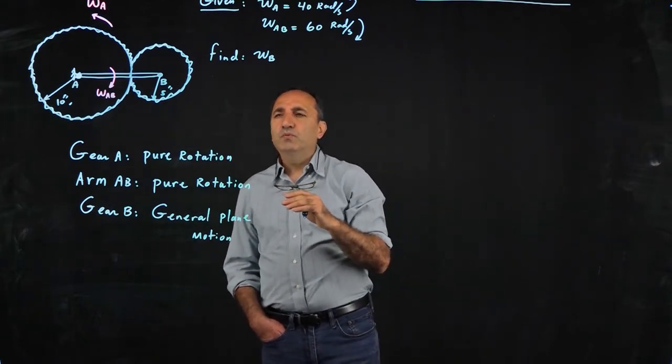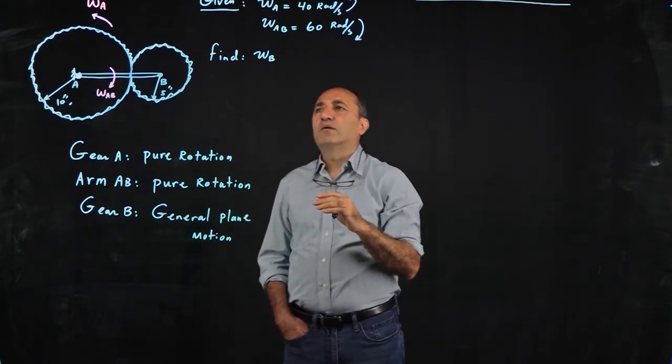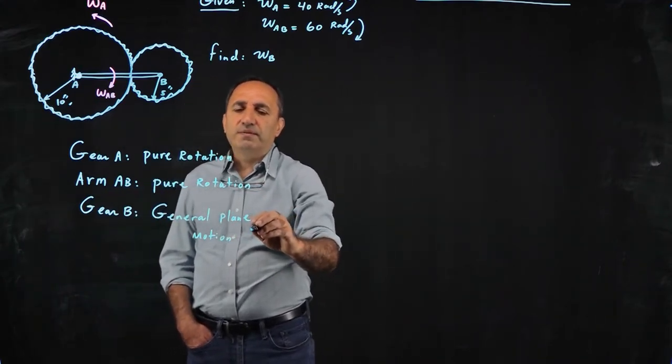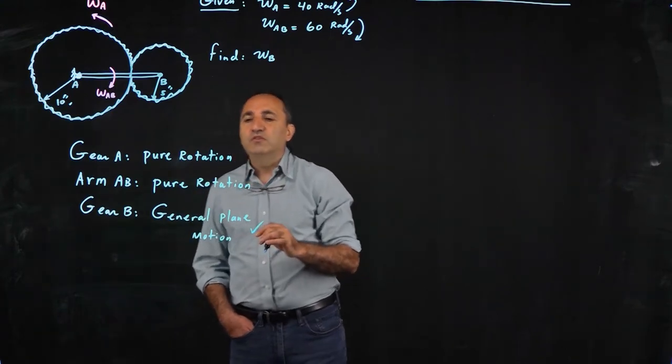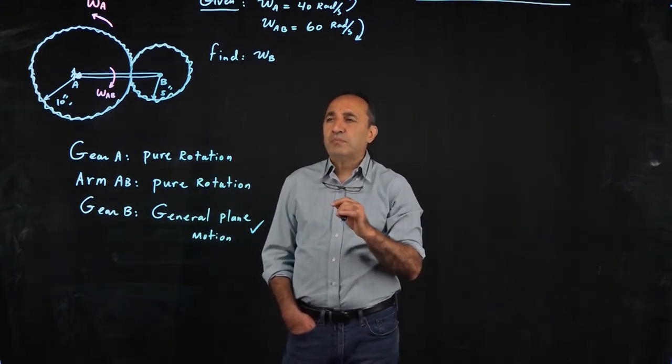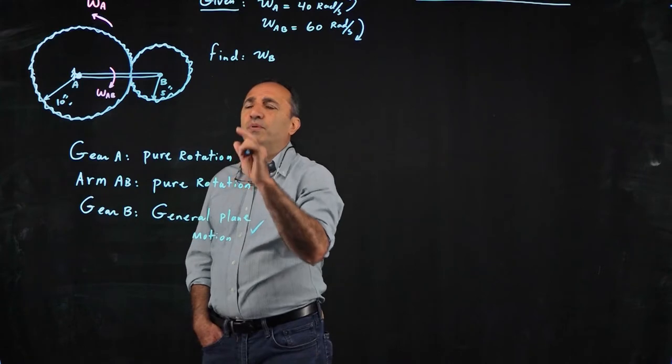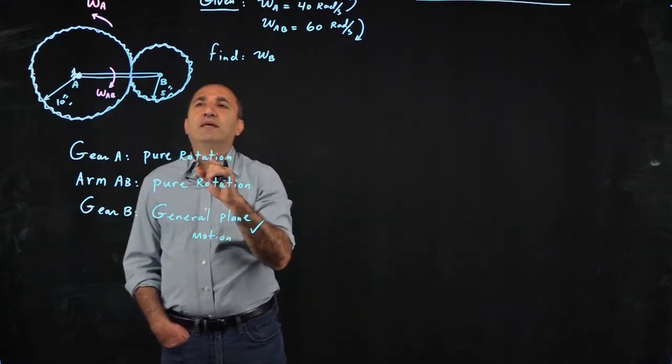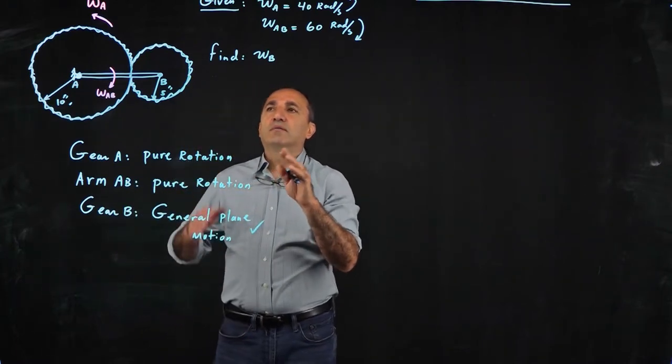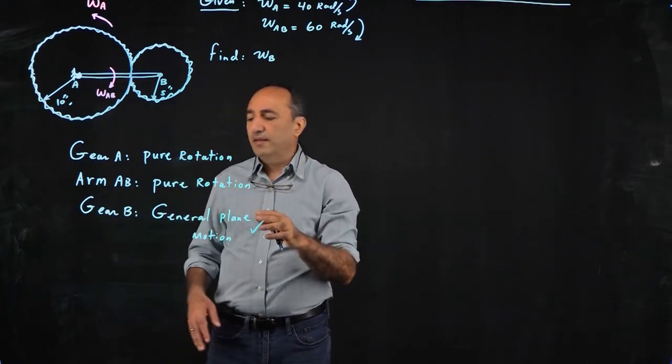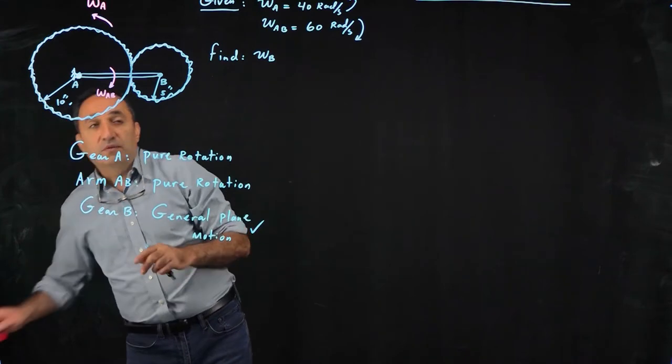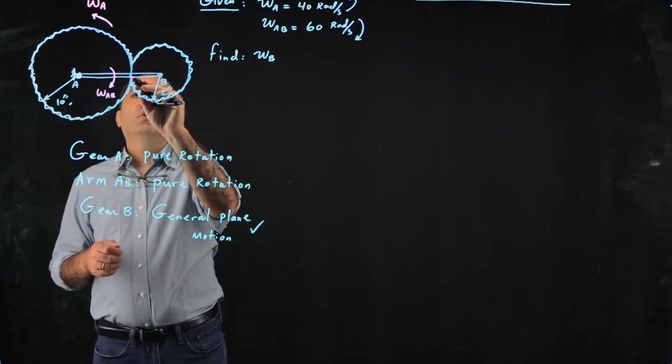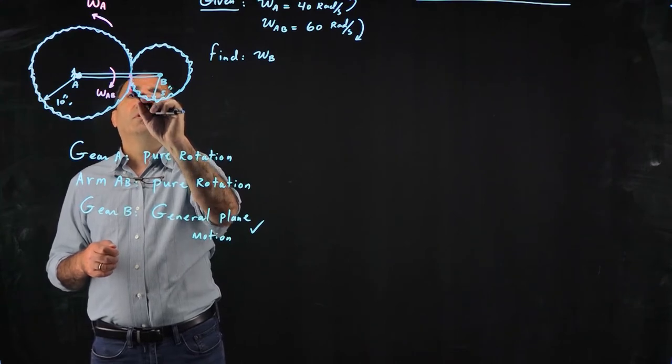Okay, so how do we solve for omega of B? Since we identify that gear B is in general plane motion, then all we have to do is pick two points on this rigid body gear B that we have information for. And it turns out we can find velocity of B and velocity of the contact point, point D.